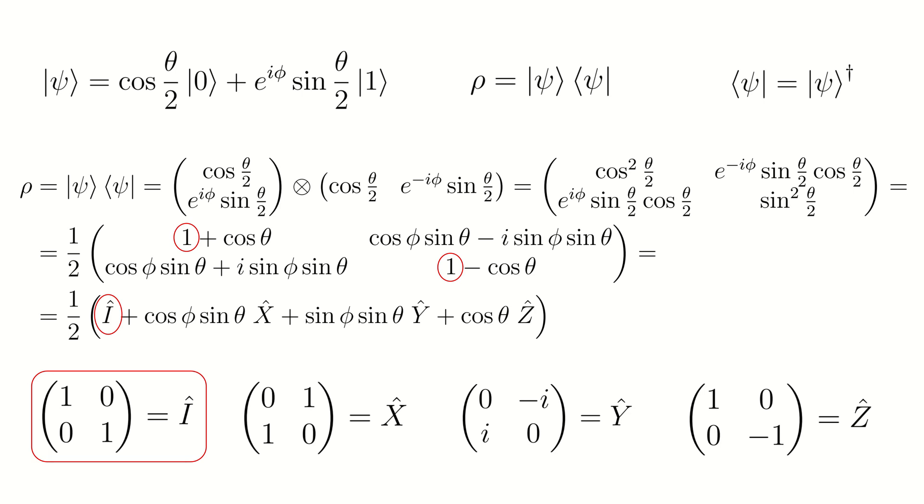Now, we can express the resulting matrix through the sum of Pauli matrices with some coefficients. In this case, the decomposition is quite simple and we can easily find the coefficients before the identity matrix and Pauli operators x, y, and z.